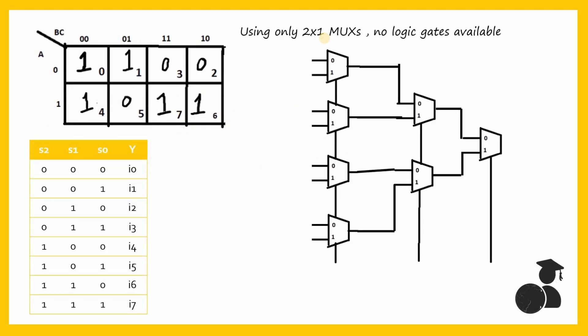However, if no other logic gates are provided and the question requires implementing your SOP function only using multiplexers, then you must first see the number of terms in the Kmap of your function and build a mux with those many input lines from the mux that is provided in the question. For our question, we had 8 terms in the Kmap, so we would require an 8-to-1 mux. But the question only provided 2-to-1 muxes, so we have to first build an 8-to-1 mux using a 2-to-1 mux tree, and then proceed forward.